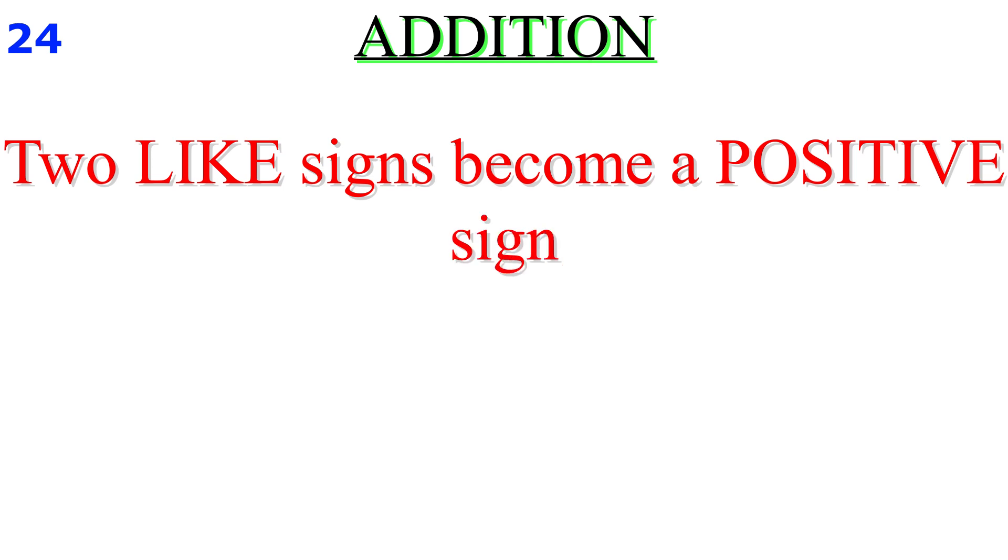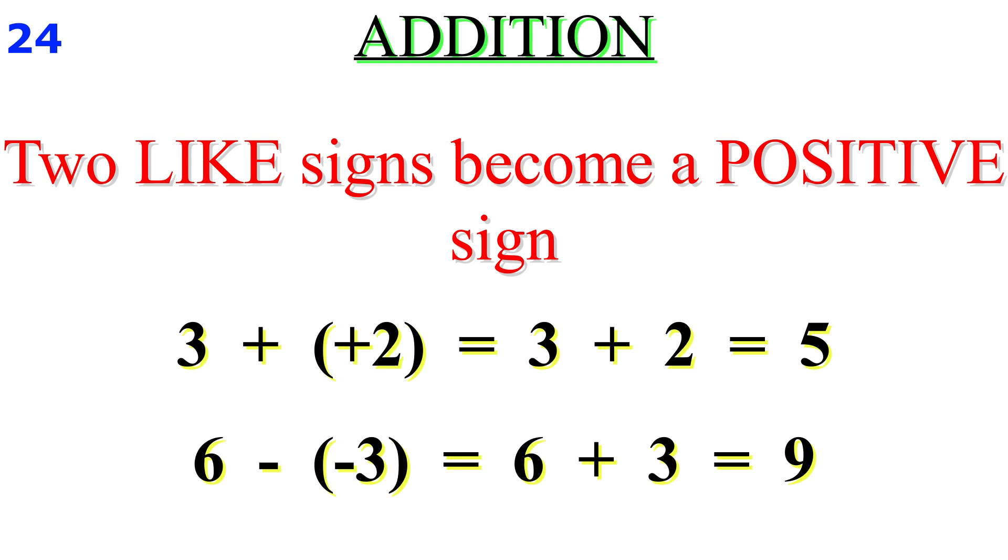Friend, number one: two like signs become a positive sign. For example, 3 plus plus 2 equals 3 plus 2 equals 5. 6 minus minus 3 equals 6 plus 3 equals 9.